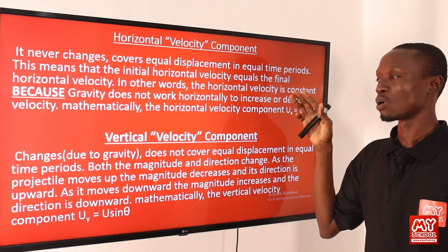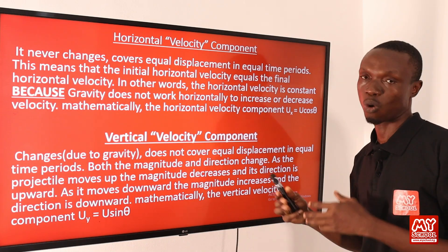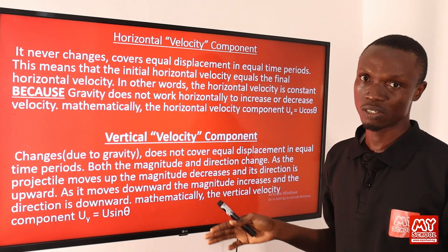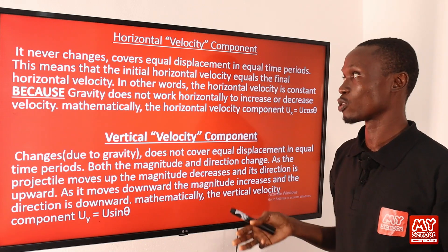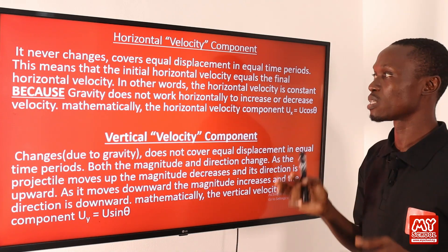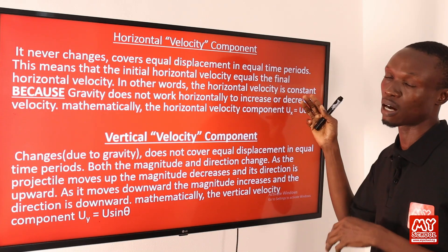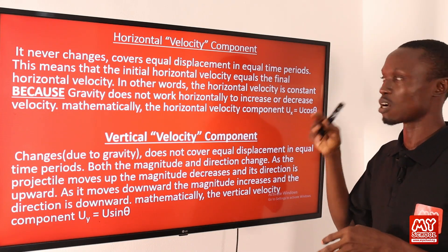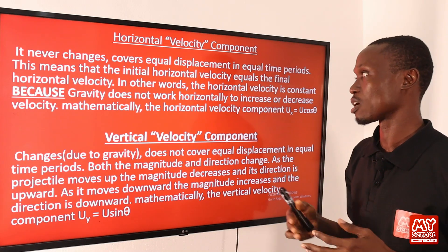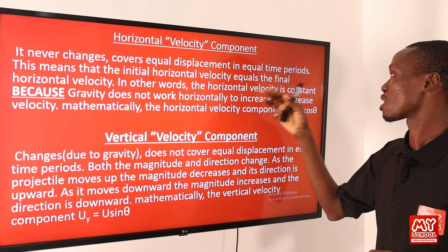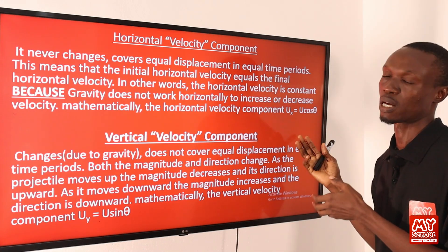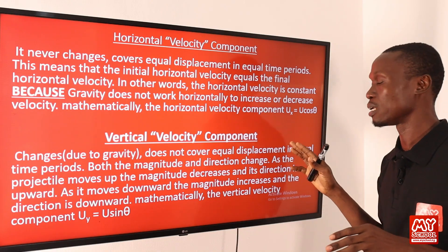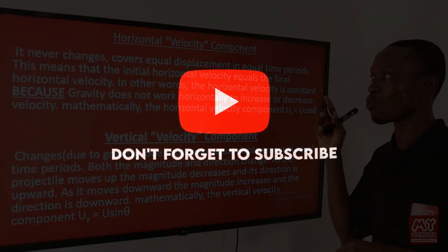For the horizontal velocity component, the velocity never changes — it is constant. It covers equal displacement in equal time periods, meaning the initial horizontal velocity equals the final horizontal velocity, so the horizontal motion is uniform. The reason the horizontal velocity is constant is that gravity does not act horizontally to increase or decrease it.